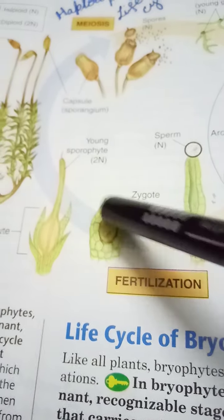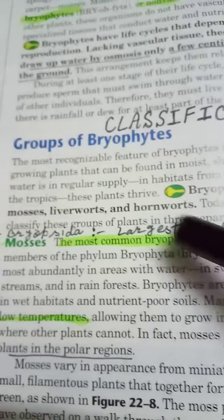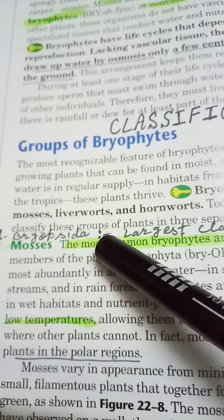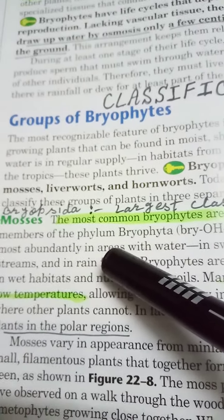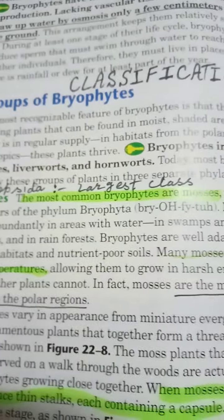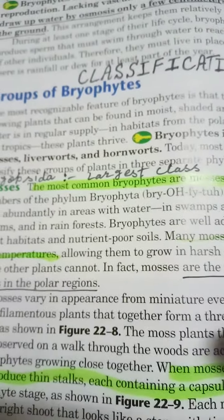Now let's talk about the classification of bryophytes. Botanists have divided bryophytes into three classes. The largest one is Bryopsida, which is the class of mosses. These are most common in polar regions. Like all bryophytes, mosses also show alternation of generation, with the gametophytic phase being dominant.